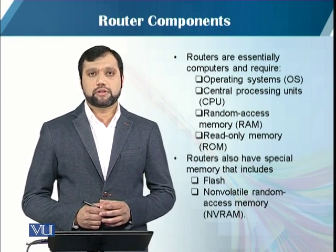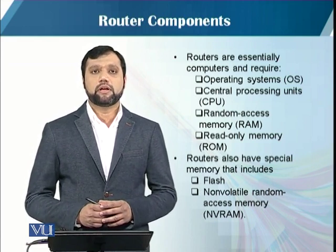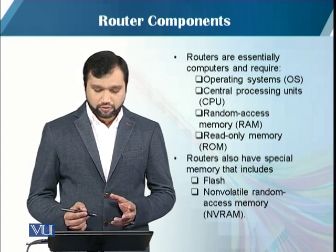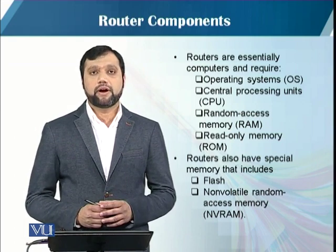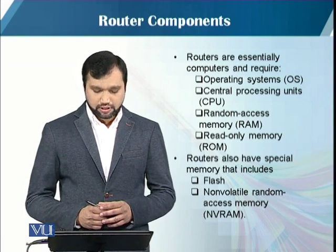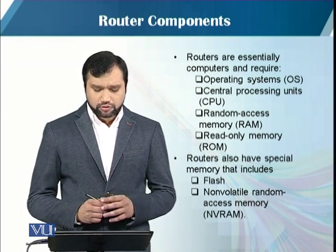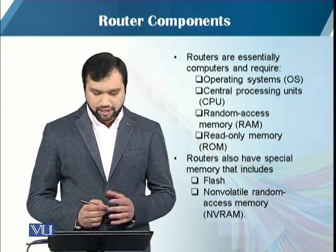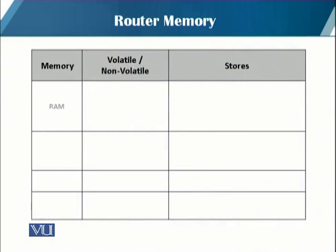Routers have CPUs — central processing units — just like a PC you have in your home. Routers have their own operating systems, and they also have RAM (random access memory), ROM (read-only memory), and some special memory that includes flash and NVRAM (non-volatile random access memory). So a router has access to four types of memory.